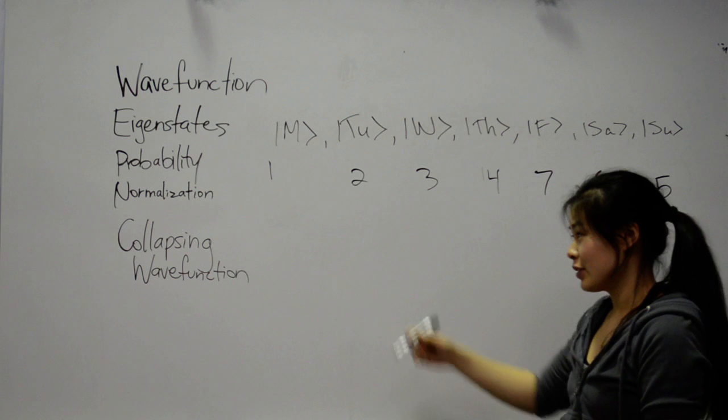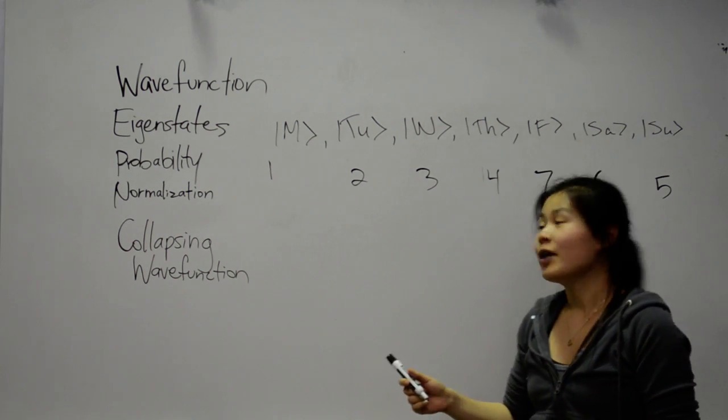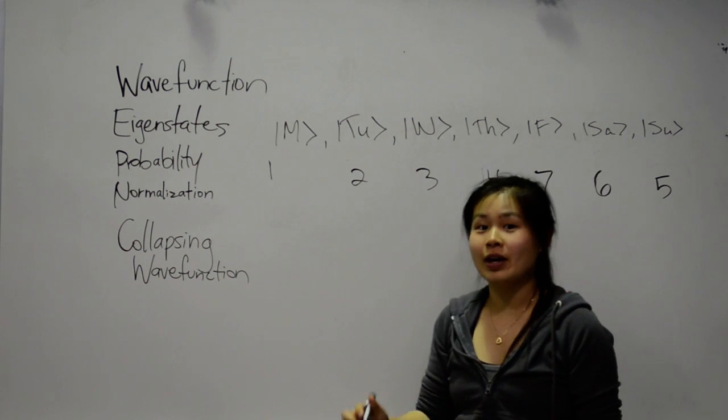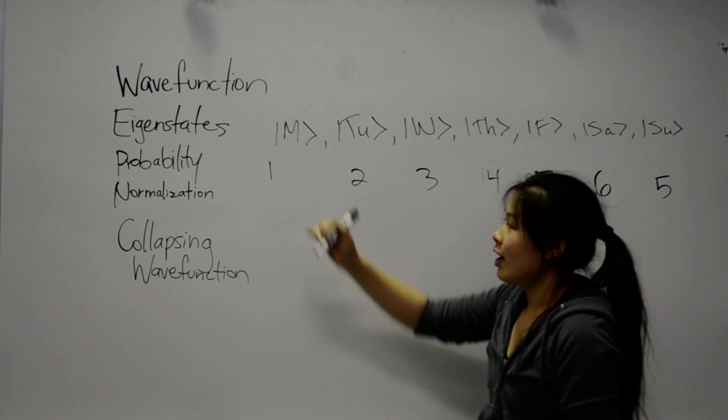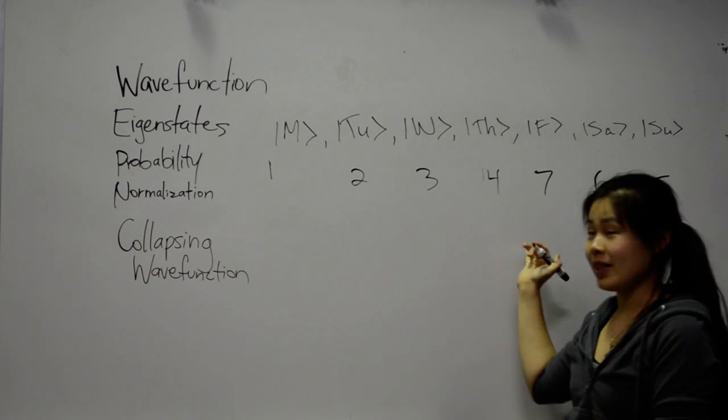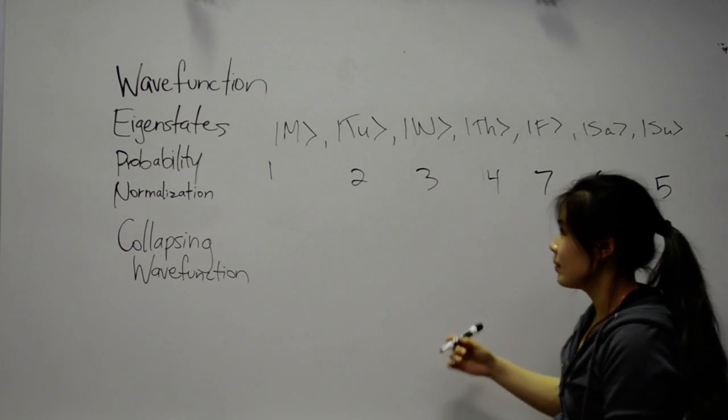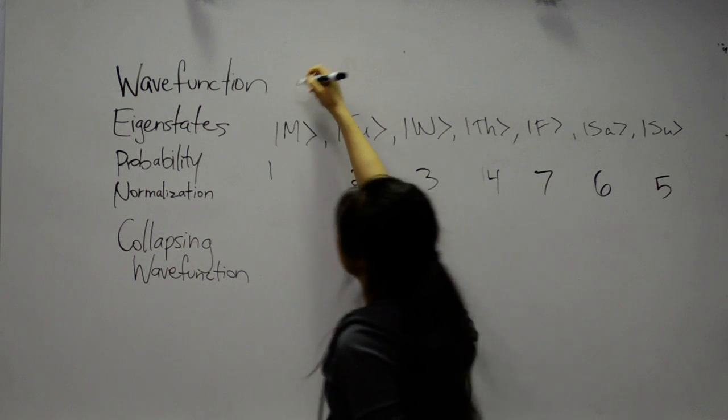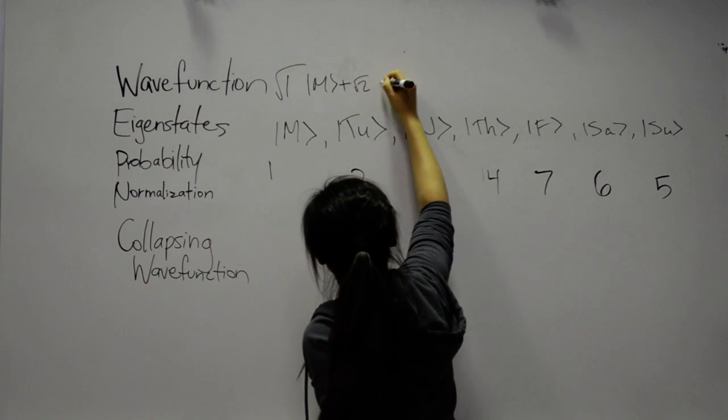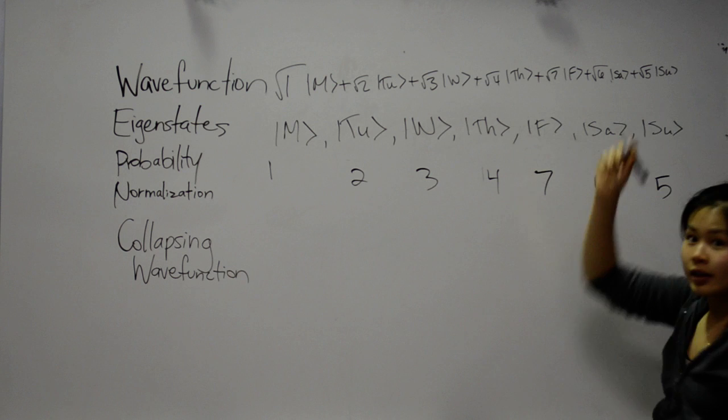In order to turn these readings into a probability, we have to take the absolute value of the square of the wave function. So to keep these the way that they are, we have to take the square roots of each of them. So that makes our wave function 1 square root of 1 times M plus square root of 2...